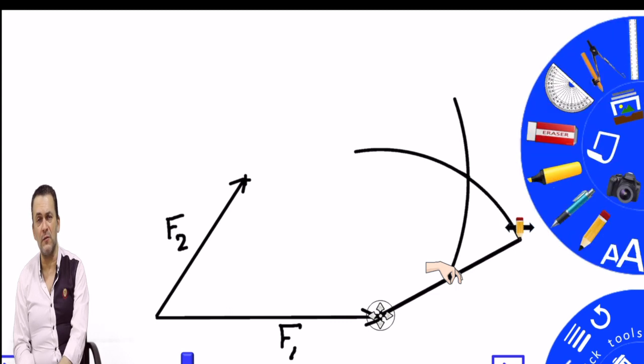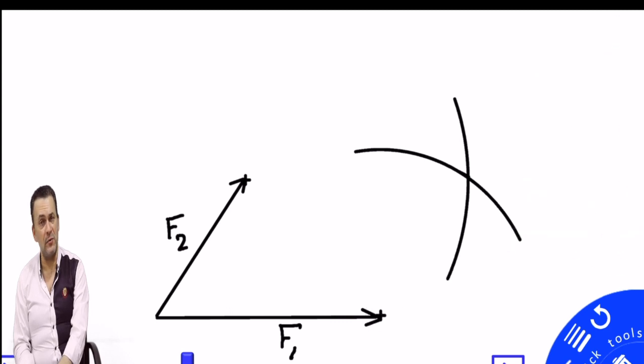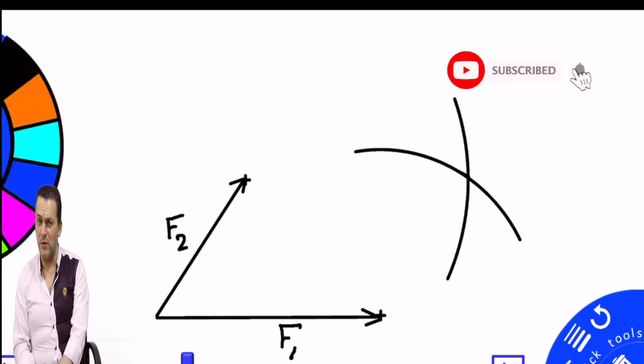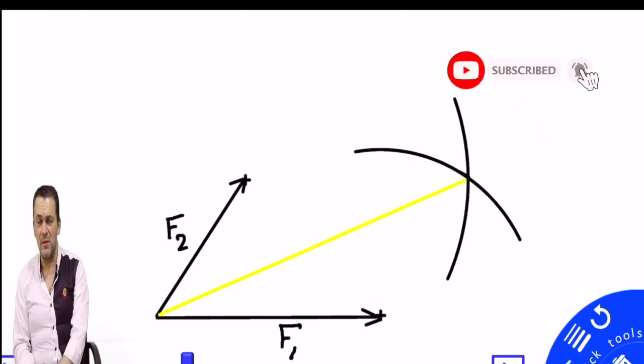After finding the intersection point, measure the length of the resultant force and use the scale to find its value in Newtons. If you like the idea, please subscribe to the channel. See you next class.